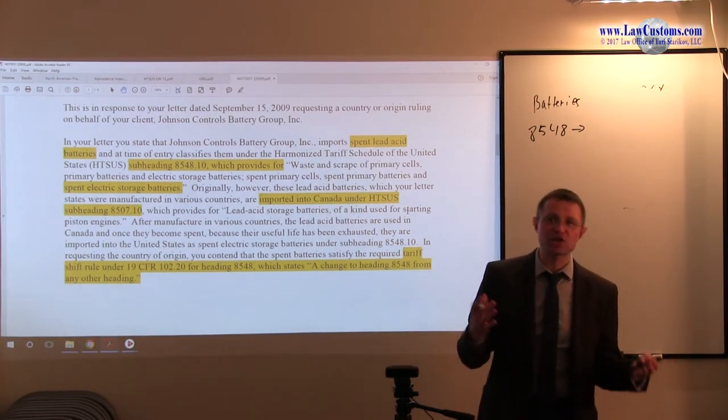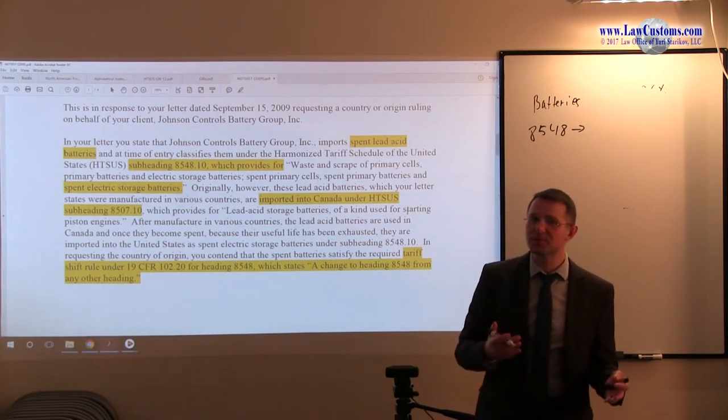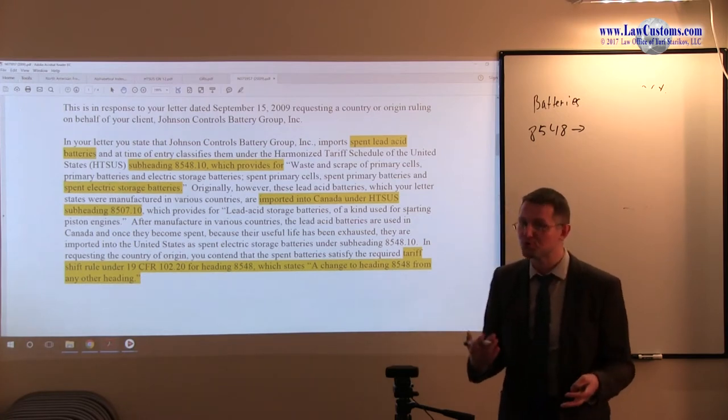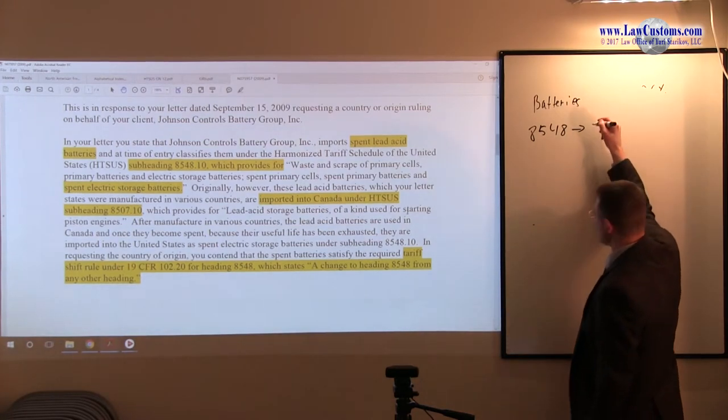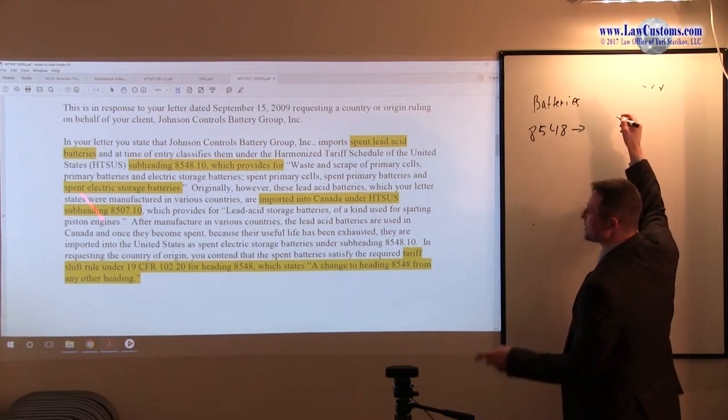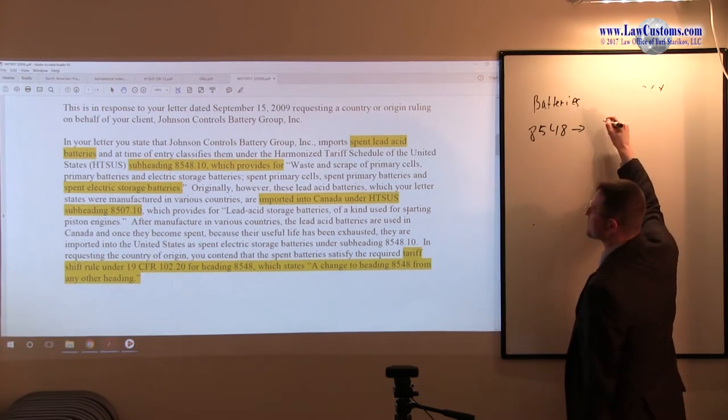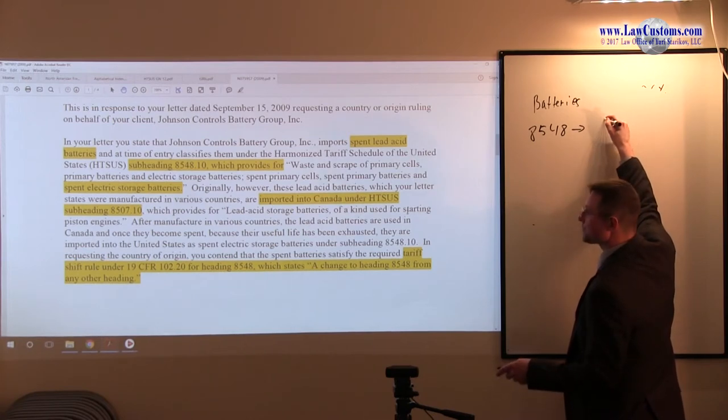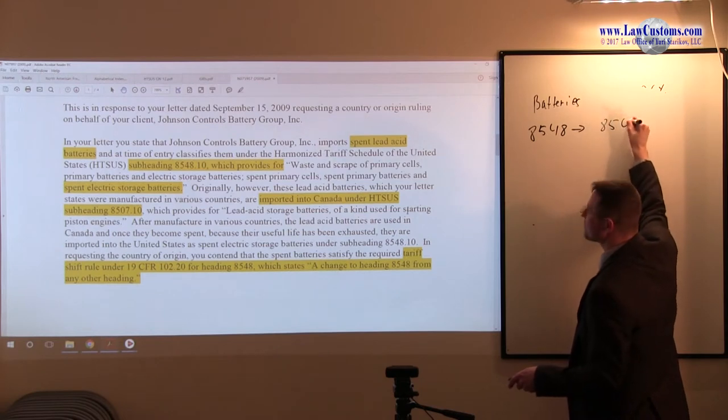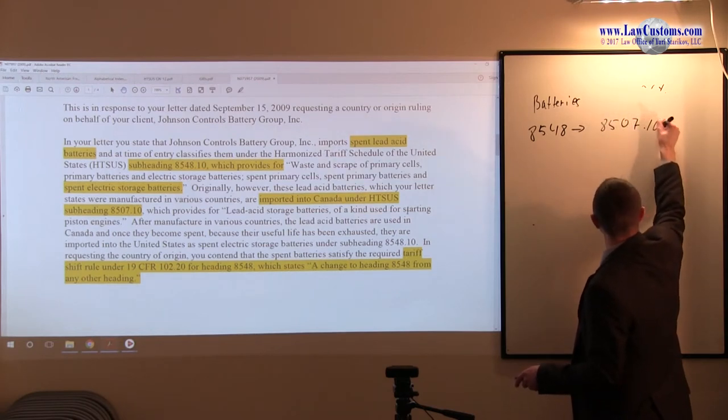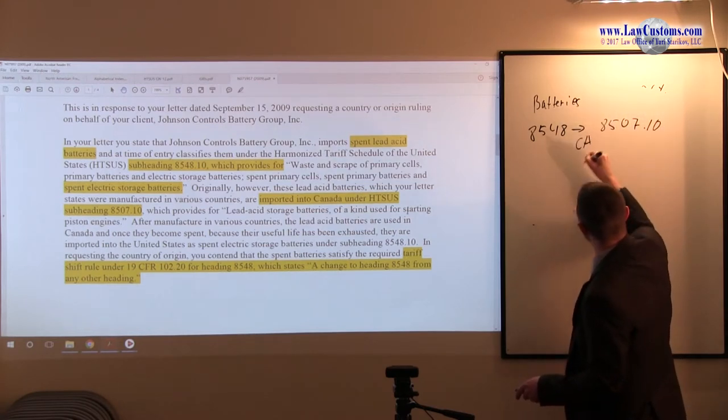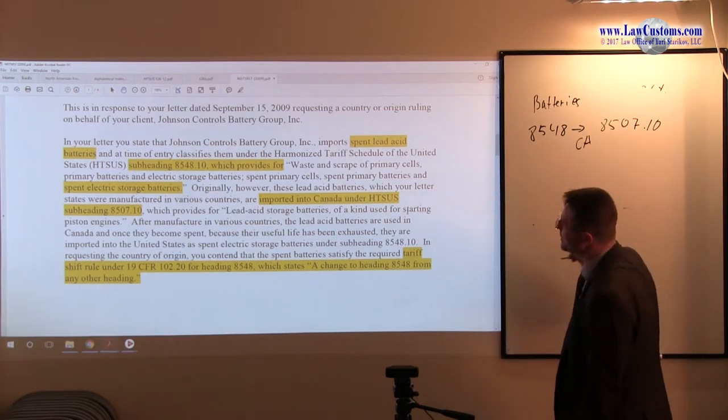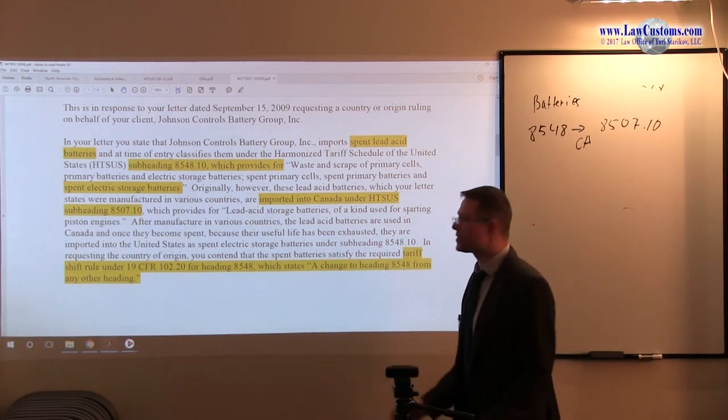The classification for the used batteries is different than classification for the non-used batteries. So once the battery becomes spent, it changes to a tariff classification 8507.10. And all this change takes place in Canada. Right? So the question is, is there enough transformation?